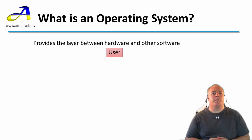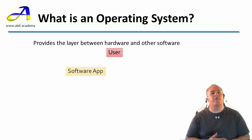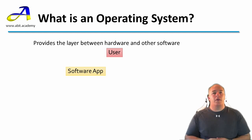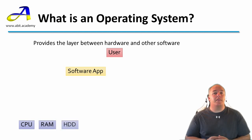Consider a computer user who wants to accomplish some tasks using a software application. As the user uses a software application, it needs to interact with the hardware of the computer — this would be the CPU, RAM, and hard drive. Everything that a computer does is broken down into a mathematical formula.